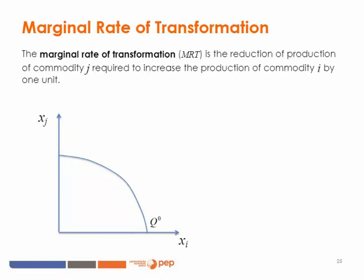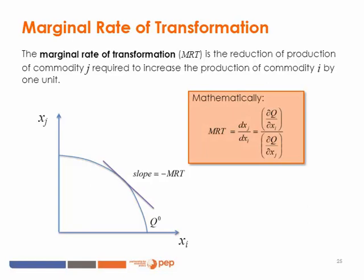The marginal rate of transformation is the reduction of production in commodity j required to increase the production of commodity i by one unit. The MRT at a given point on the frontier is equal to the slope of the tangent line in absolute terms. Mathematically, the marginal rate of transformation is given by the ratio of marginal physical productivity of each commodity.